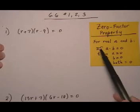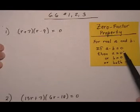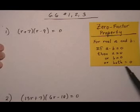It says that for any real number A and B, if A times B equals zero, then it must be true that either A is zero, B is zero, or they both are zero.